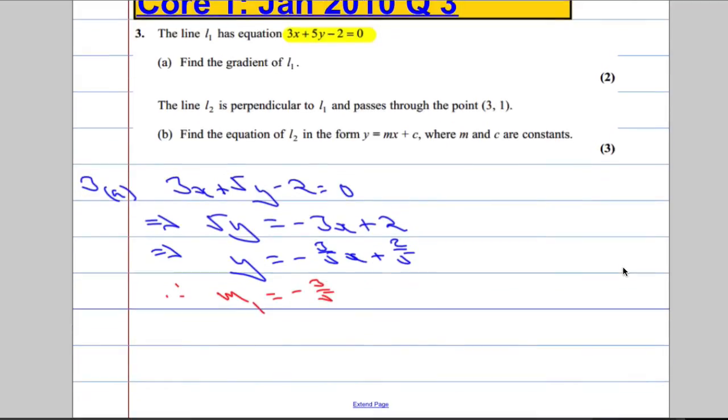The second part now says the line L2 is perpendicular, which is really important information, perpendicular to L1, and passes through this point here. Find the equation of L2 in the form y equals mx plus c, where m and c are constants.